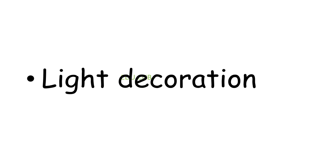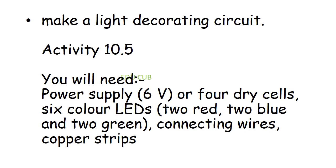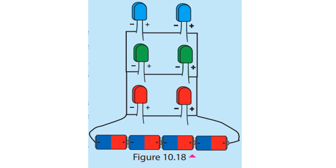The next type is light decorations. You may have seen that light decorations are used to decorate various occasions at night. Here you have to make a light-decorating circuit. You will need a power supply, six colored LEDs in red, blue, and green, connecting wires, and copper strips.